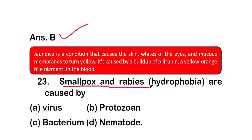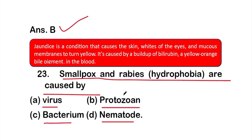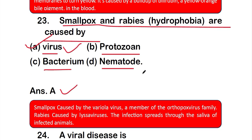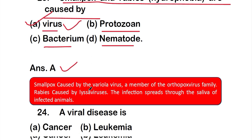Question number 23: Smallpox and rabies (hydrophobia) are caused by — Option A: virus, Option B: protozoan, Option C: bacterium, or Option D: nematodes. The right answer is Option A, virus. Smallpox is caused by the variola virus, a member of the Orthopoxvirus family, and rabies is caused by the rabies virus. The infection spreads through the saliva of infected animals.